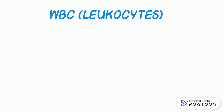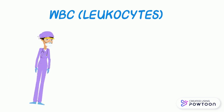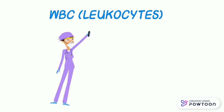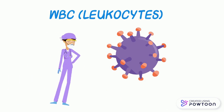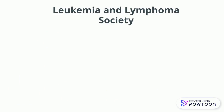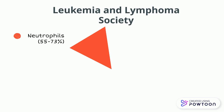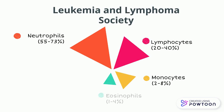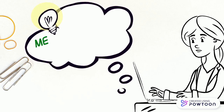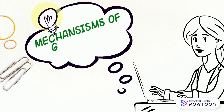White blood cells are vital components of the blood and of the immune system, fighting with infections and other toxic agents. According to the Leukemia and Lymphoma Society, they are composed mostly of neutrophils, then lymphocytes up to 40%, monocytes, eosinophils, and lastly basophils. And now, let's talk about the real deal.